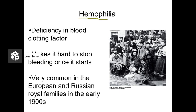Another sex-linked disorder is hemophilia. Hemophilia is a bleeding disorder — people with this disorder don't make all of the proper clotting factors they need in their blood and have difficulty forming blood clots when they cut themselves. People with hemophilia can also experience constant slow internal bleeding, which is a much larger problem. This disorder results in general weakness and malaise, and can be fatal if the person really hurts themselves and can't stop bleeding. This disorder was very famously carried in the Russian and European royal families back in the early 20th century.